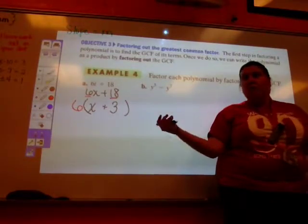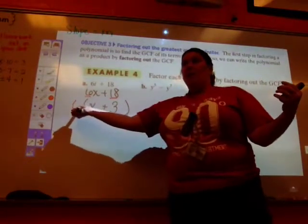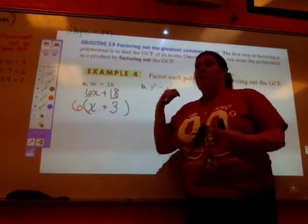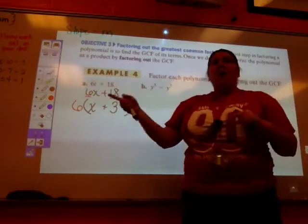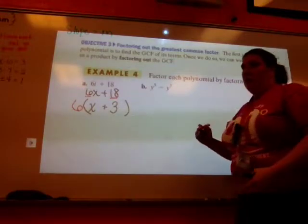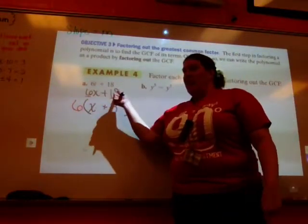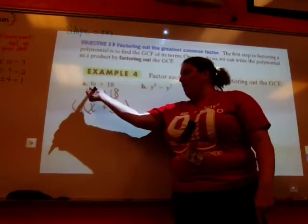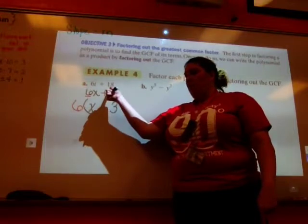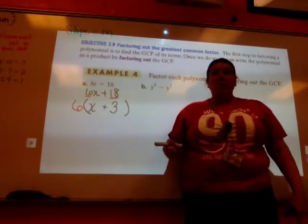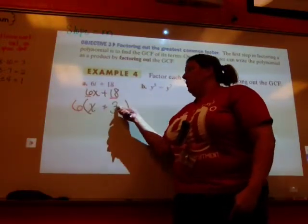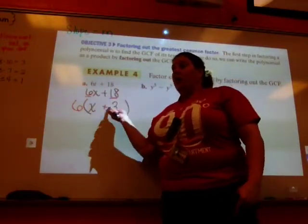What is my greatest common factor? 6. When I pull that out, what's it leave me with? x plus 3. Now think of this thing, reverse distributed. If I were now to distribute this, what should happen? I should get 6x plus 18. 6 times x is 6x and 6 times positive 3 is positive 18. Does that make sense?